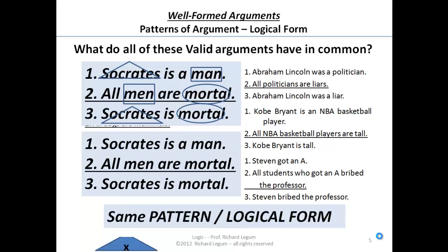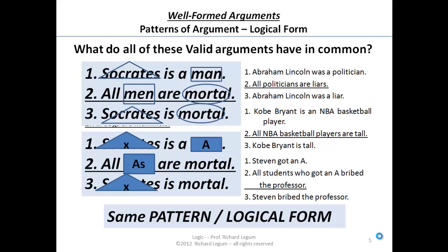All we're trying to do is get a simple way of naming a pattern so you can see that an argument is following it. So rather than the triangles and the squares and the circles, what we're going to do is put X for the individual — the name of the person. And instead of the rectangles, we're going to use the letter A. So instead of 'man,' instead of 'was a politician,' instead of 'tall' — all the same thing. And instead of 'mortal,' we're going to put in B. So the logical form of all these arguments is: X is an A. All A's are B's. Therefore, X is a B.